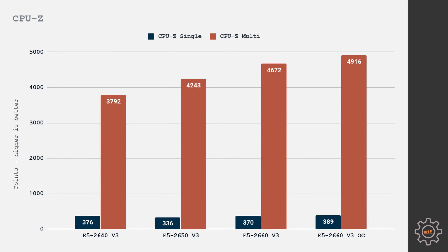Let's start with CPU-Z. Single core performance is almost identical between all CPUs because their frequencies are very similar. The overclocked E5 2660 takes first place with 389 points, the 2640 takes second with 376 points, the 2660 without overclock scores 370 points, and the 2650 takes last with 336 points. In multi-core, the first two places go to the 2660 — 4900 points overclocked and 4600 without. Third is the 2650 at 4200 points, and last is the 2640 with 3700 points.